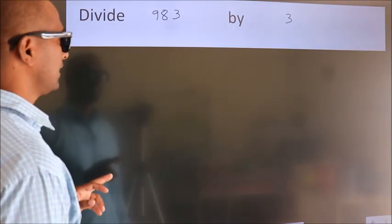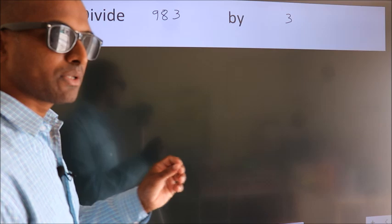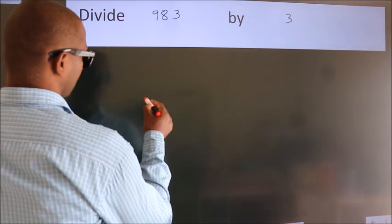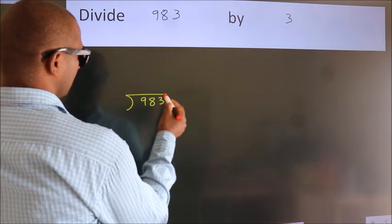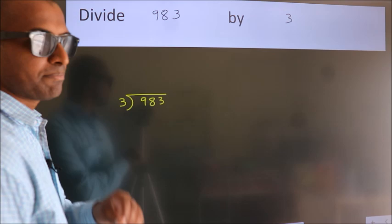Divide 983 by 3. To do this division, we should frame it in this way: 983 here, 3 here. This is your step 1.